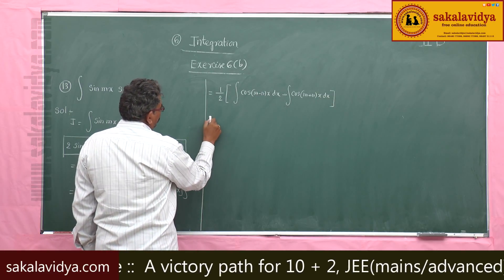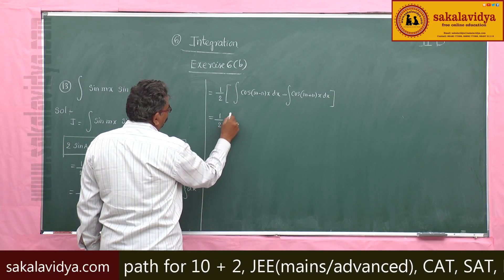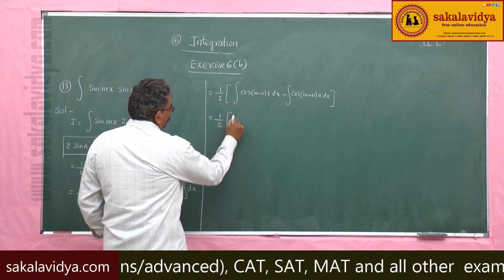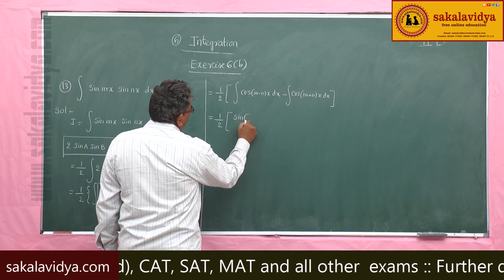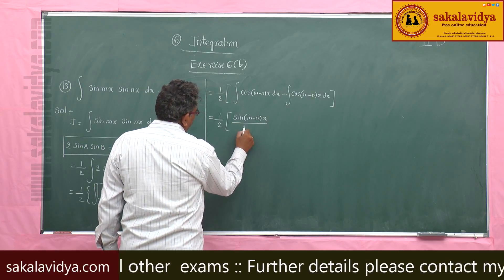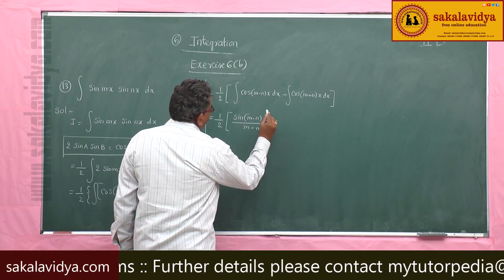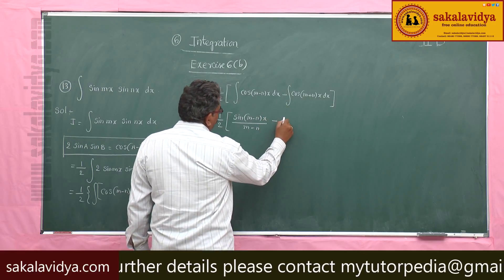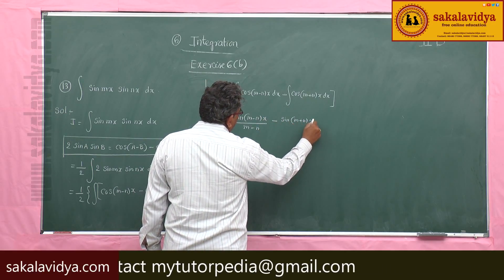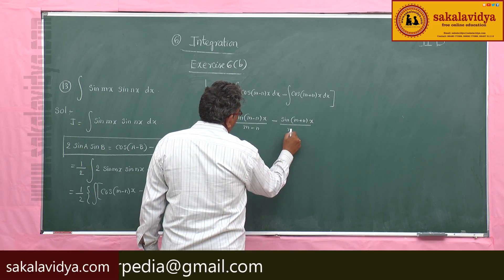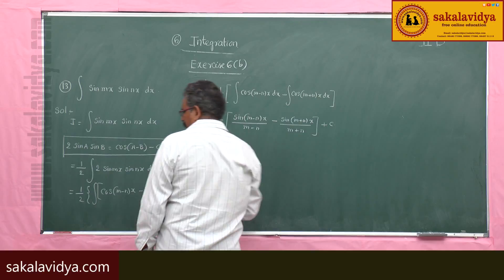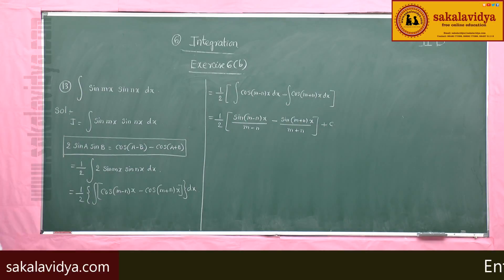Integrating: the integral of cos is sin. So this gives (1/2) times [sin(m-n)x over (m-n) minus sin(m+n)x over (m+n)] plus constant of integration.